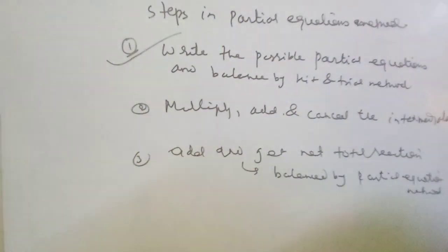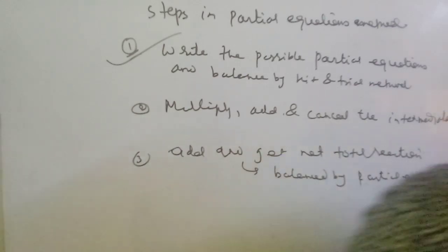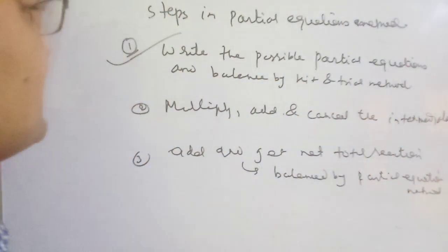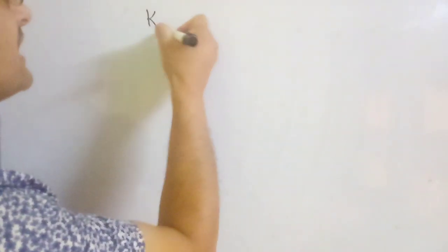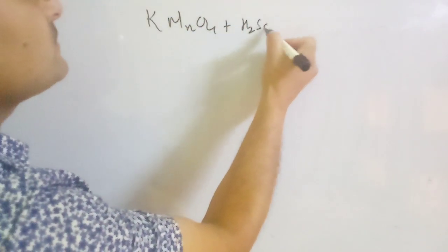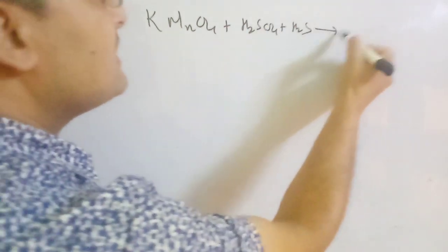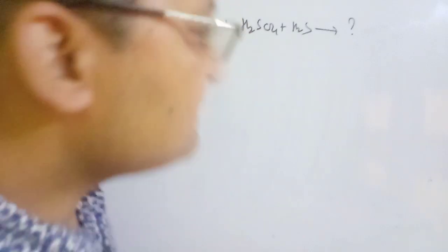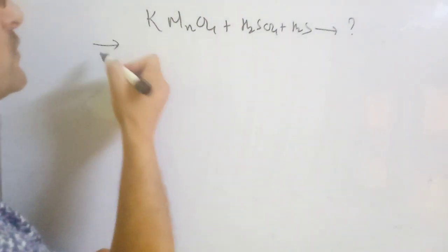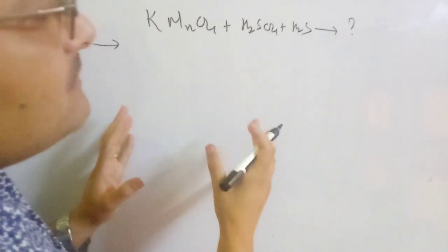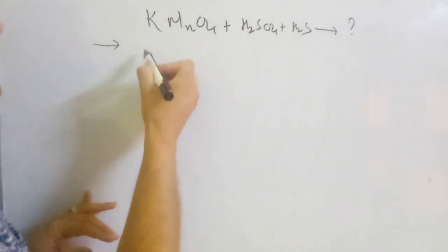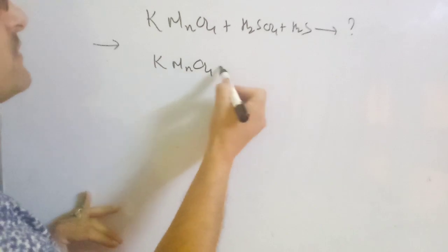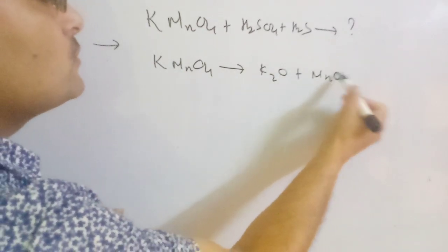To explain all these things, I'm going to give some examples showing how to balance equations by partial equations method. For example, if you have the reaction: KMnO₄ plus H₂SO₄ plus H₂S — you have to find the products as well as balance it by partial equation method. In the first step, KMnO₄ decomposes into K₂O plus MnO plus nascent oxygen.